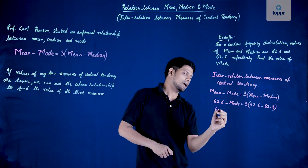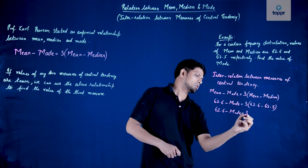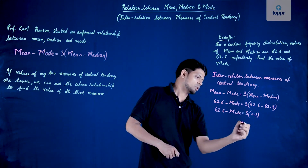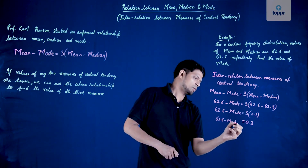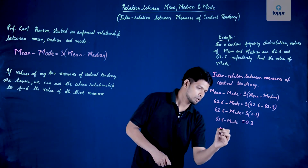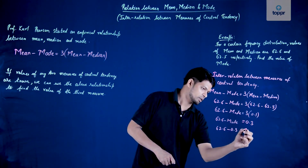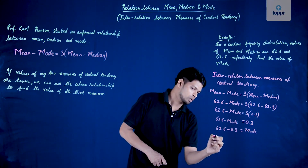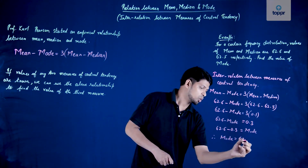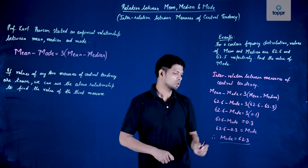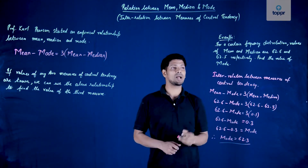So we get: 62.6 minus mode equals three multiplied by 0.1, which gives 0.3. Shifting the terms, mode equals 62.6 minus 0.3. Therefore, mode is equal to 62.3.